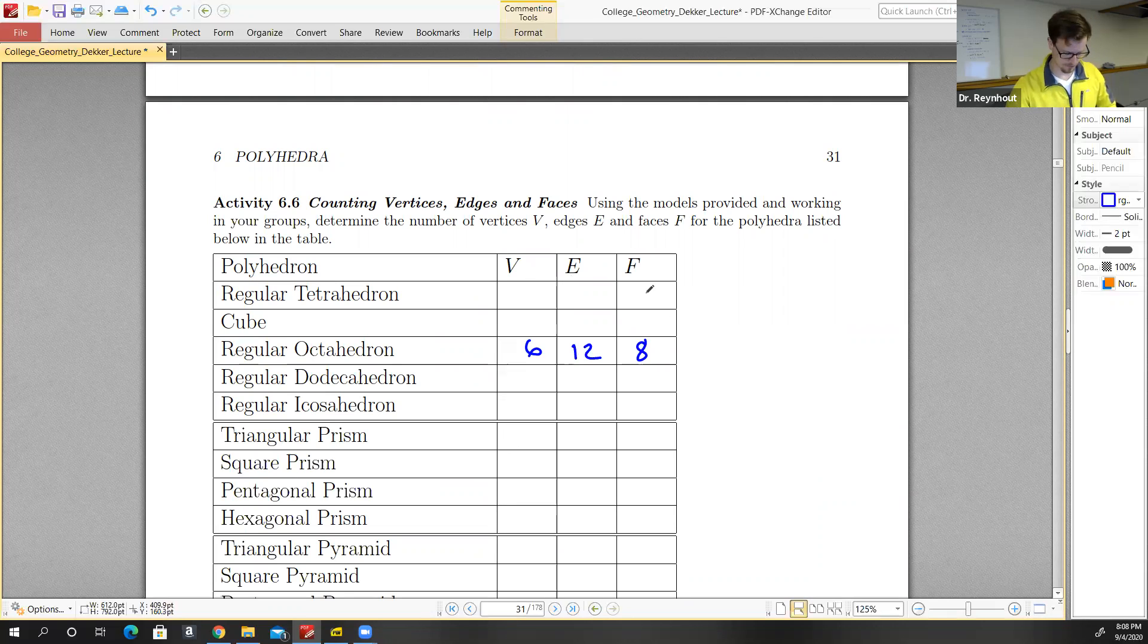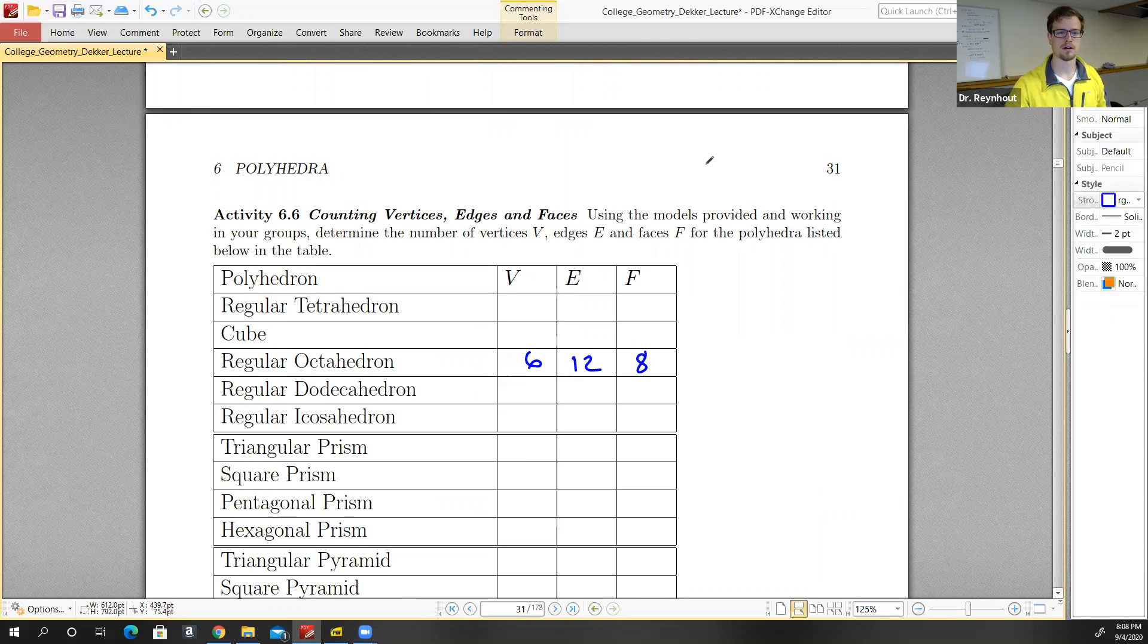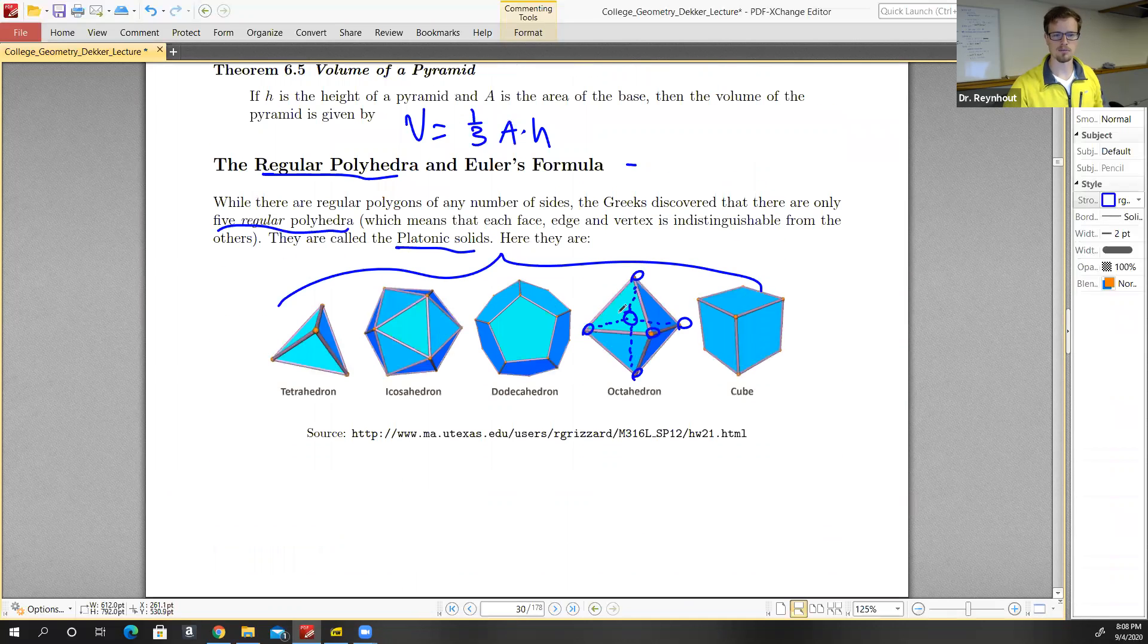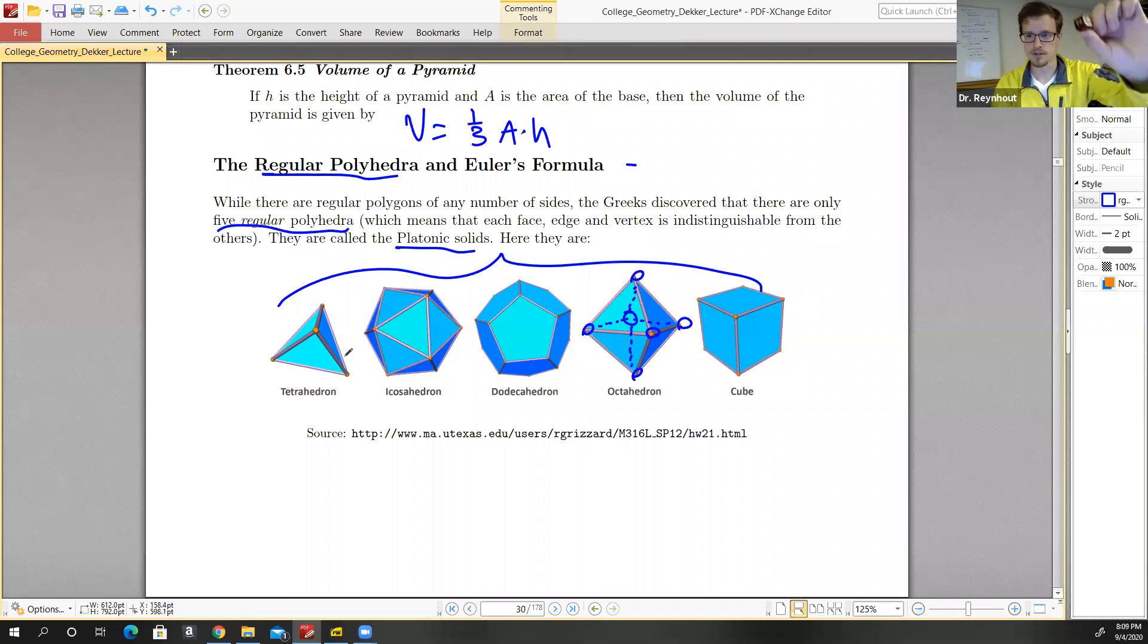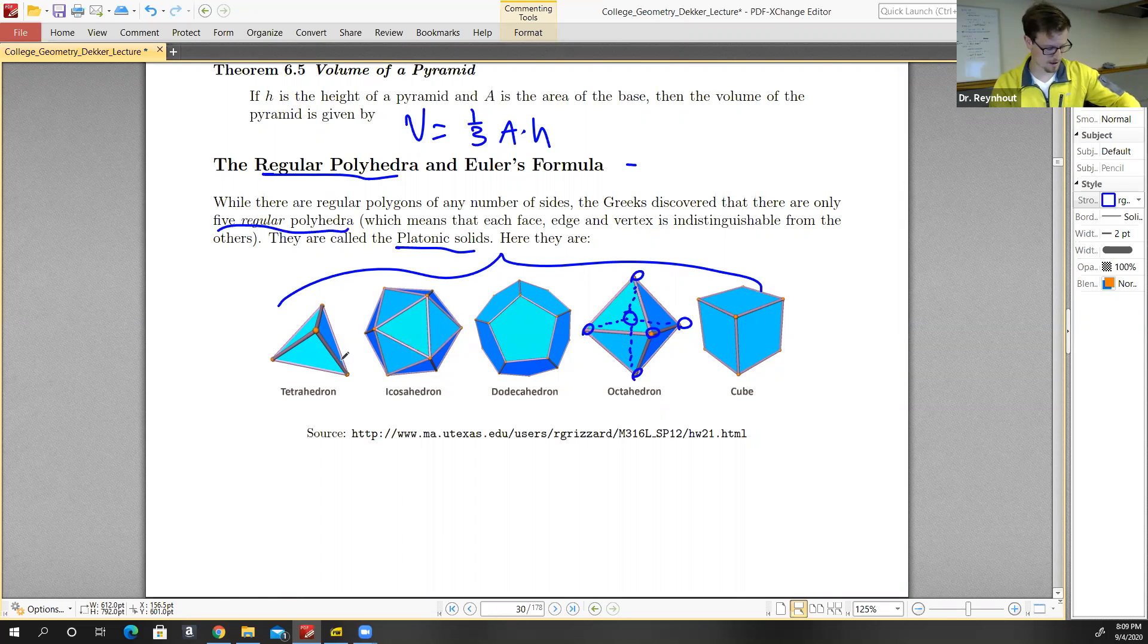So that's how we would fill it in for the regular polyhedra. Again, I'll bring in, I have several of these dice. Here's the dodecahedron. Of course, a cube is just a regular die. And we have the icosahedron as well.